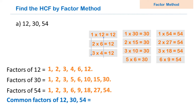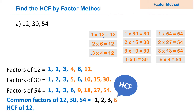Then we find out the common factors. So the common factors of 12, 30, and 54 are: 1, 2, 3, and 6. Then we find out the HCF. So the highest common factor of 12, 30, and 54 is equal to 6. Hope you understand how we find the HCF by factor method.